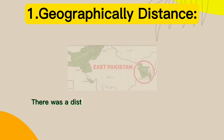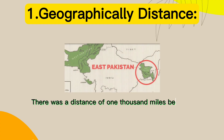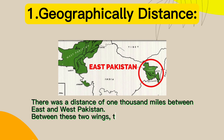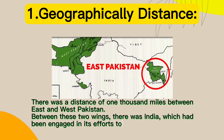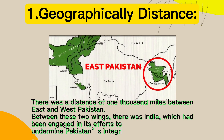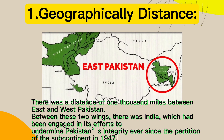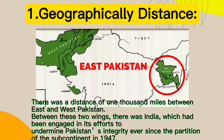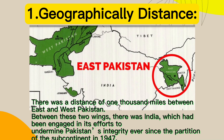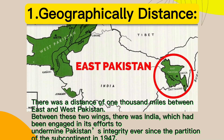1. Geographic distance. There was a distance of 1,000 miles between East and West Pakistan. Between these two wings, there was India, which had been engaged in its efforts to undermine Pakistan's integrity ever since the partition of the subcontinent in 1947. The cultures of the two parts were also very different from each other.